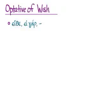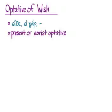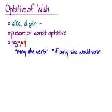The first is the optative of wish. The syntax for an optative of wish is the introductory word eithe, or the two words ei gar, or really nothing, plus a present or aorist form of the optative, plus the negative mē if the sentence is negative. The default translation is 'may she verb' or 'if only she would verb,' both of which express a wish in English.